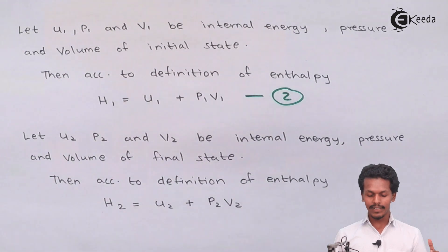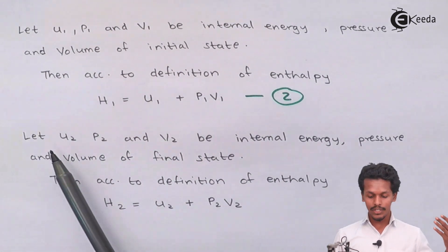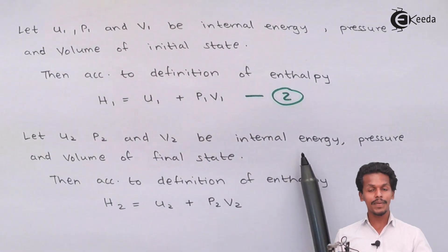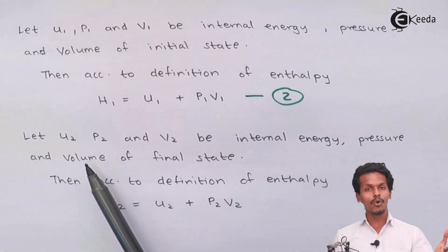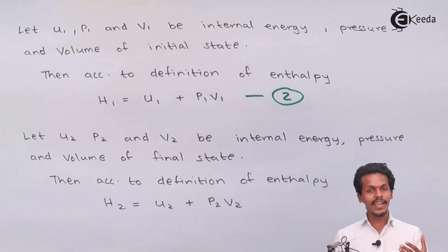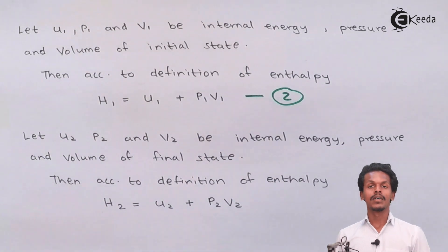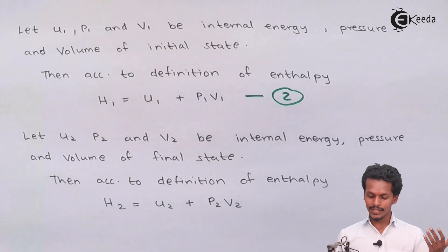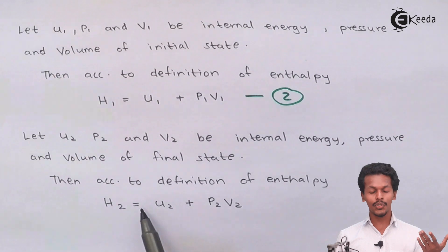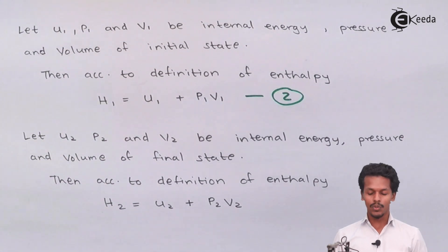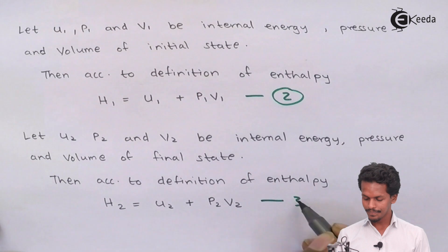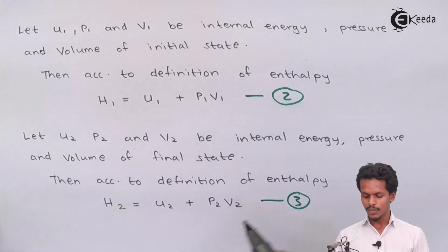Let U2, P2, and V2 be the internal energy, pressure, and volume of the final state. Again, according to the definition of enthalpy, H2 equals U2 plus P2 V2. Let this be equation number three.